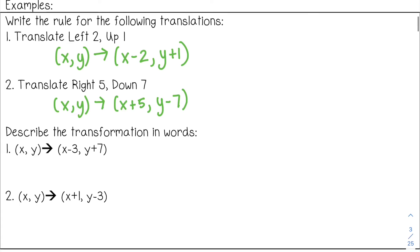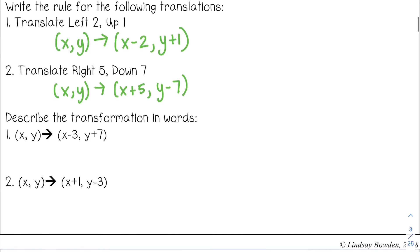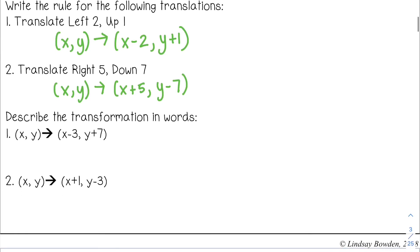Now we're going to go backwards — from the coordinate rule back to words. Number one: I have (x − 3, y + 7). We know this is a translation, so we write translate. x minus three means to go left three, and y plus seven means to go up seven.